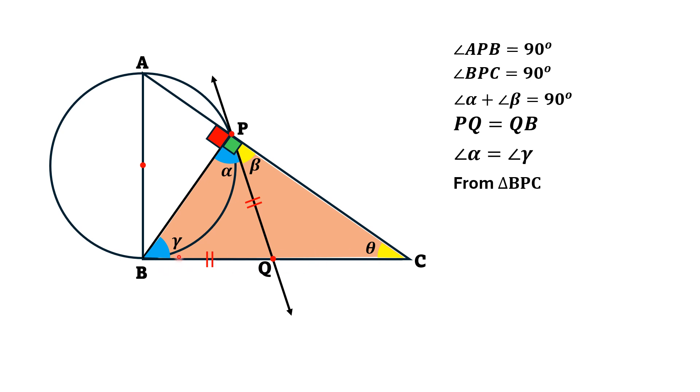So, angle gamma plus angle theta must equal 90 degrees. Since from this equation, angle alpha plus angle beta is 90 degrees, and from this equation, angle gamma plus angle theta equals 90 degrees.